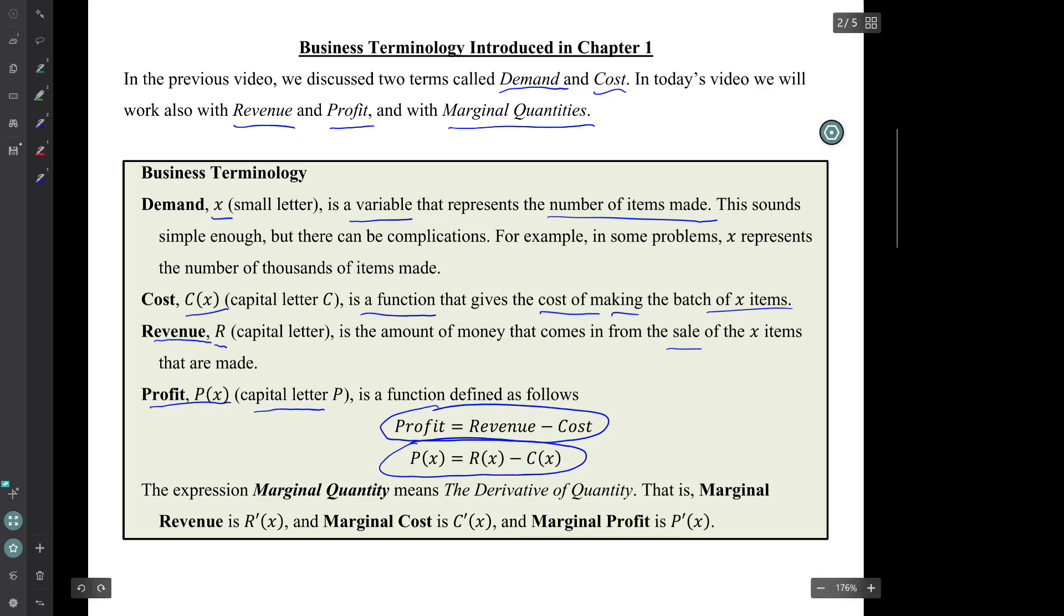So we have these four terms, demand, which is a variable, cost, which is a function, revenue, which is a function, and profit, which is a function. To that, we add this idea of marginal quantity, which just simply means the derivative of a quantity. So marginal revenue is R prime. Marginal cost is C prime. Marginal profit is P prime. Those are all capital letters.